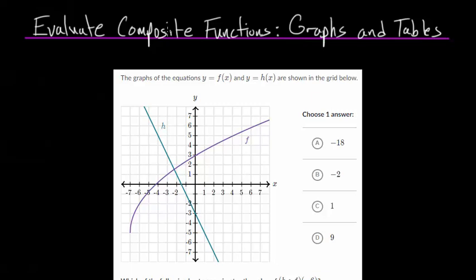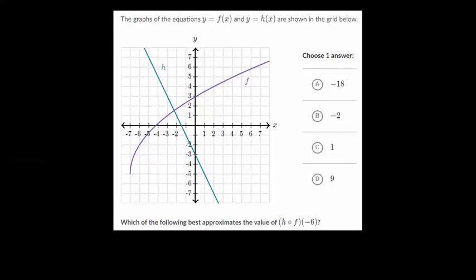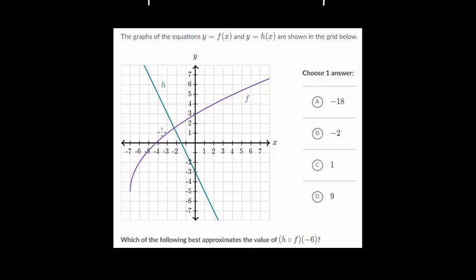For this video, I'd like to focus on evaluating composite functions, but this time specifically with graphs and tables. So we have this first problem here, which is a graph of two different functions, f of x and h of x. And we need to know what best approximates the value of h of f of negative six.